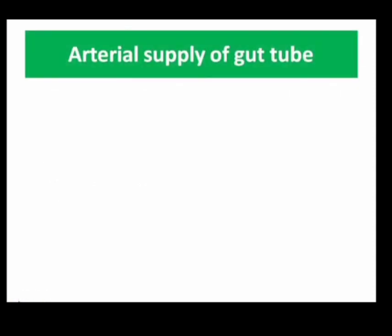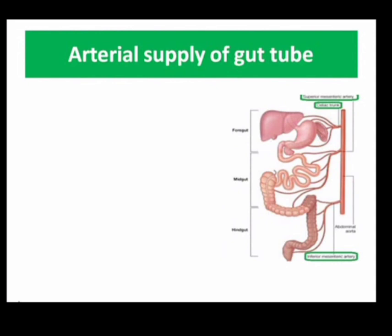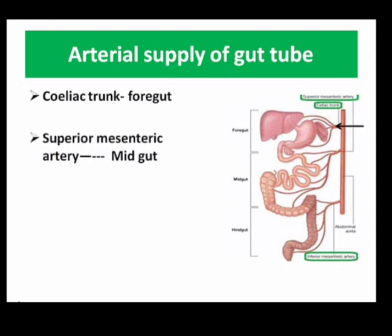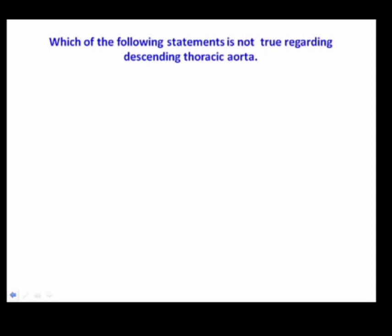Duodenum is supplied by the artery of which gut — foregut, hindgut, midgut, or both A and C? This MCQ is from arterial supply of the gut tube. The arteries of the gut tube are contained within the dorsal mesentery and arise from the dorsal aorta. The celiac trunk represents the artery of the foregut, the superior mesenteric artery the midgut, and the inferior mesenteric artery the hindgut. Since the duodenum develops from both foregut and midgut, it is supplied by both the superior mesenteric artery and the celiac trunk.